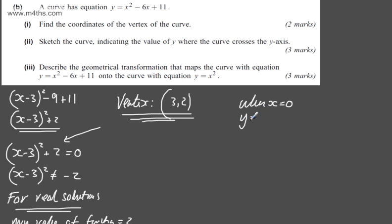It will cross the y-axis when x = 0. When x = 0, y will be equal to 0² - 6(0) + 11. So we can see that y = 11. So we'll have the point (0, 11).